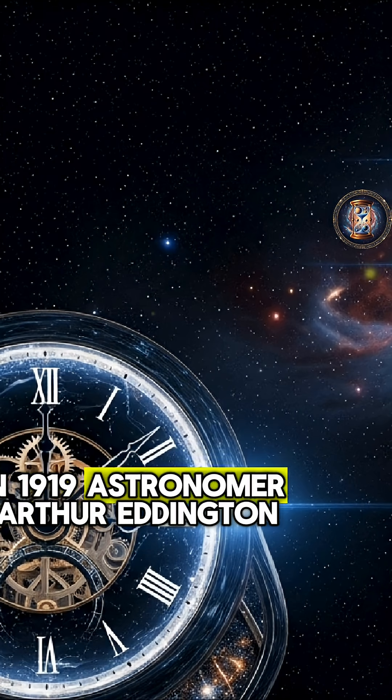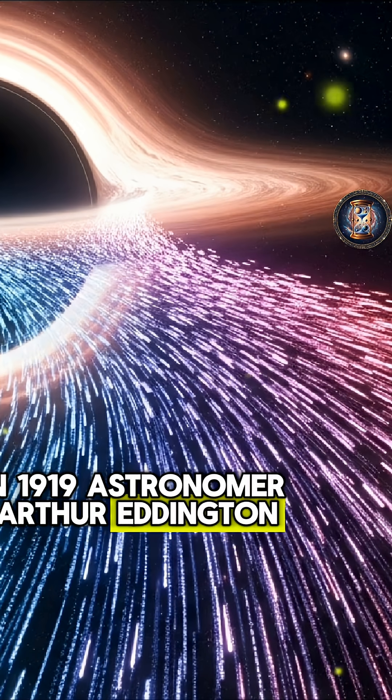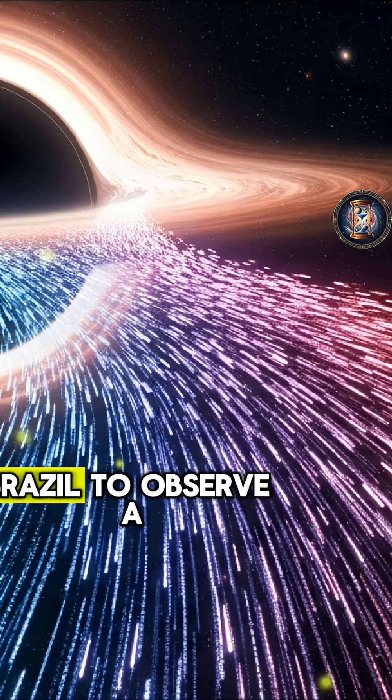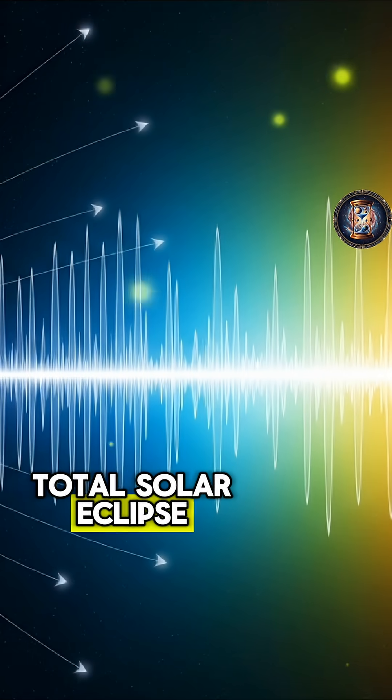In 1919, astronomer Arthur Eddington organized an expedition to Principe and Sabral, Brazil, to observe a total solar eclipse.